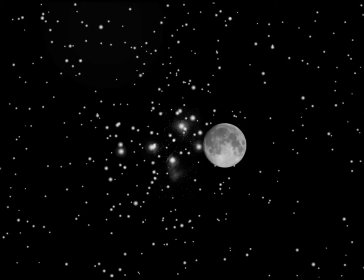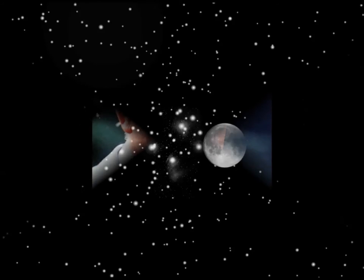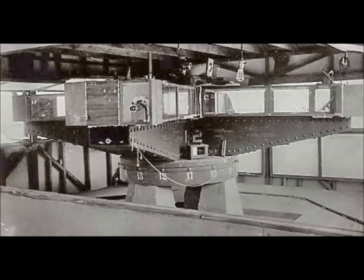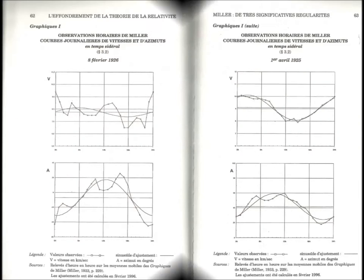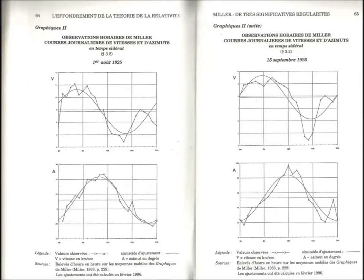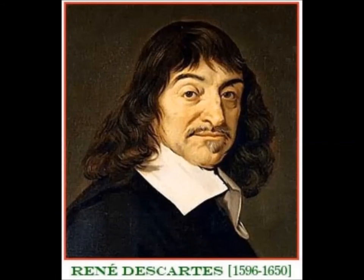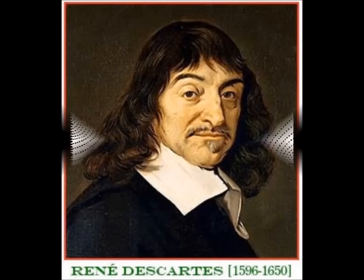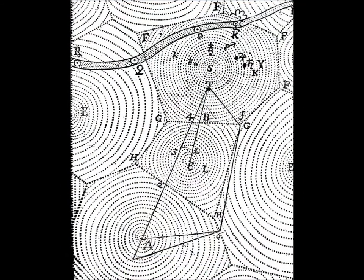By renouncing to this pure postulate of Maxwell it can be envisaged to understand the results obtained by Professor Allais. Miller's measures with the Michelson interferometer are correlated to the respective positions of the earth, the sun and the moon. So it is that Descartes was right. Gravitation and light are carried by the very same medium. This is the famous theory of vortices.